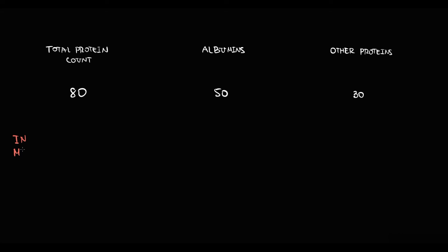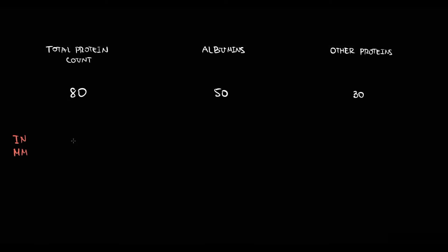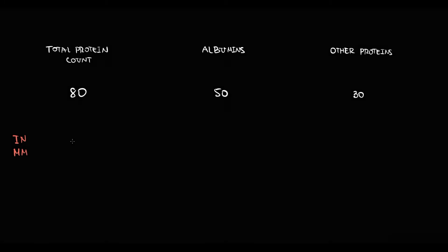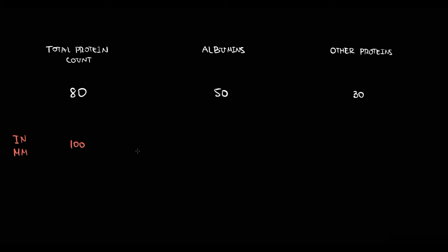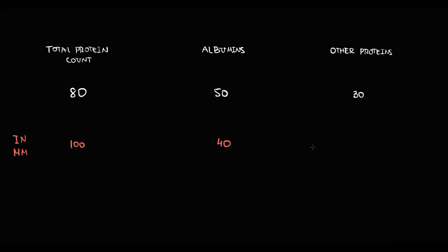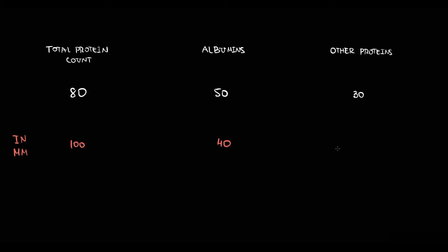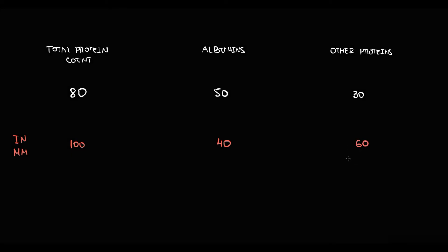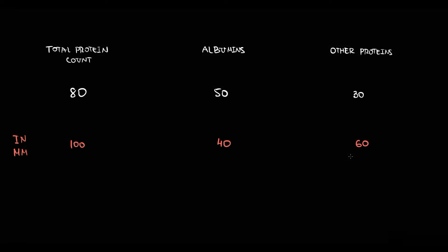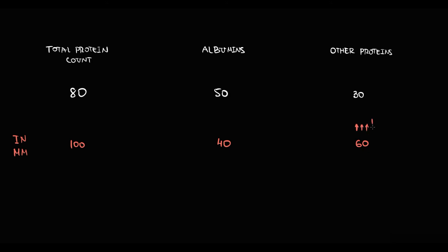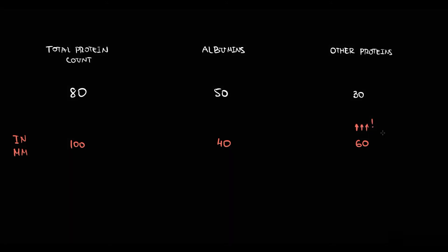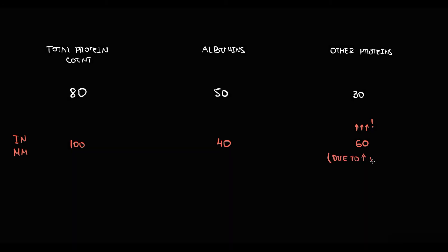But in multiple myeloma, frequently you look at the total protein count and it is 100. Then you look at albumin and the albumin level is 40. 100 minus 40 is 60 — so the amount of all other proteins is 60, which is significantly higher than normal. You can suppose that this increase in total protein is caused by elevation of exactly the gamma globulin fraction.